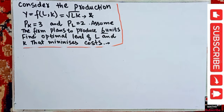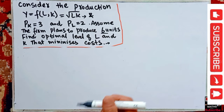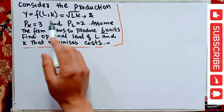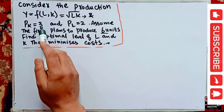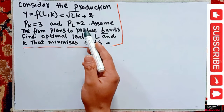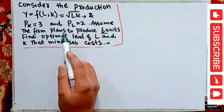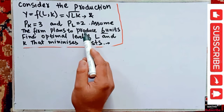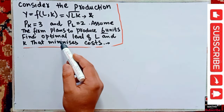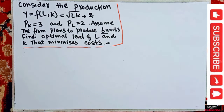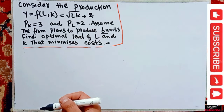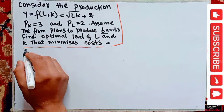One of the questions asked in the GATE economics paper of 2021 was: consider the production function y = √(LK), price of capital is given as three, price of labor is given as two. Assume the firm plans to produce six units. Find the optimal level of labor and capital that minimizes cost. So we have to solve the cost minimization problem.